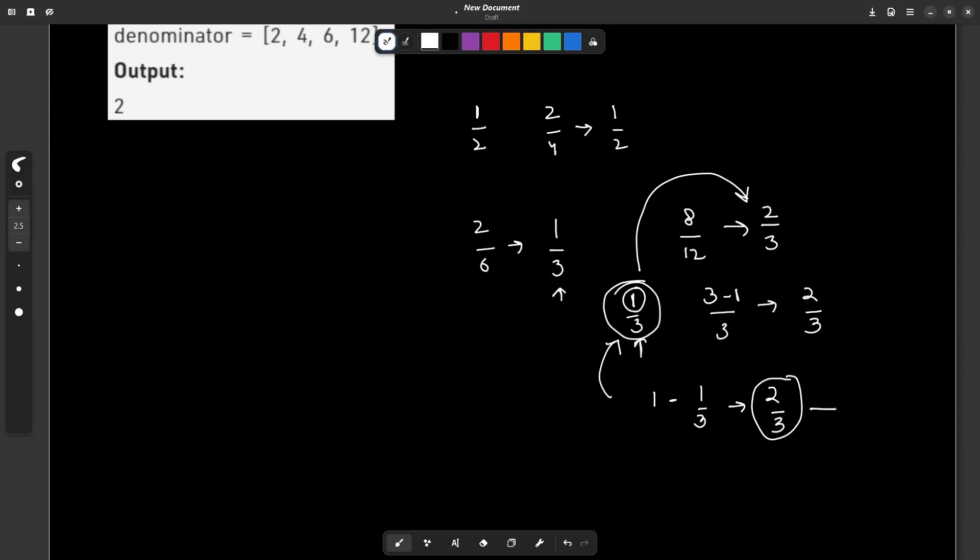I can store this information or the frequency of these elements in a data structure like a map. It can be like a pair of integers, the first part will be a pair storing the numerator and the denominator respectively and this will be the actual frequency. After reducing the fractions I can store them in this particular map and then according to the frequency I will add it to my answer.